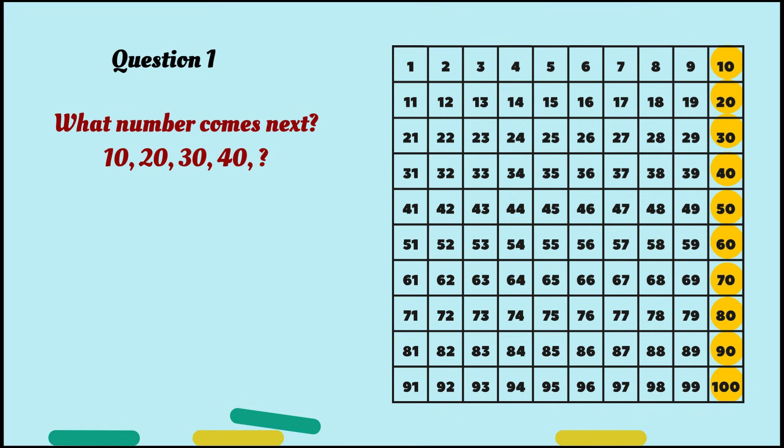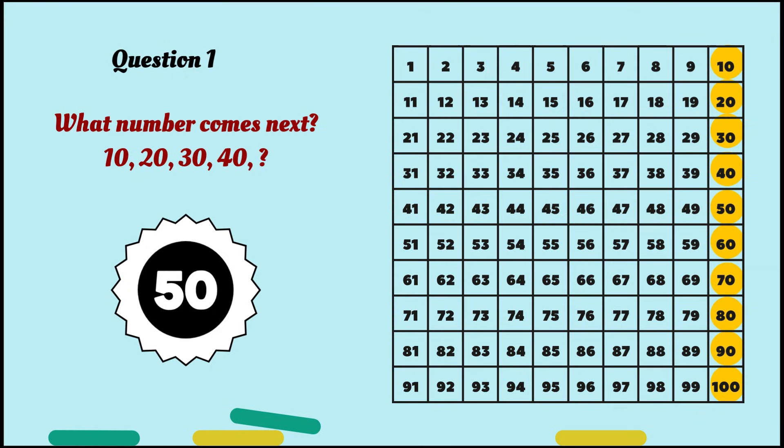Question number 1. What comes after the sequence? 10, 20, 30, 40. If you guys said 50, great job! In the grid, 10, 20, 30, 40, 50. Yes! Awesome job!